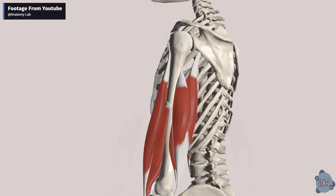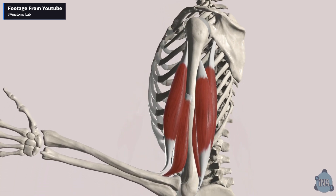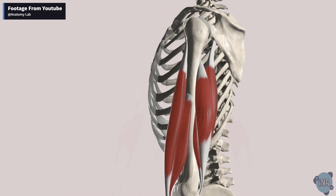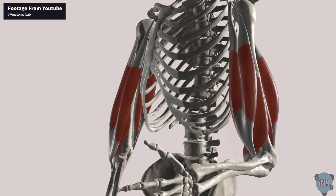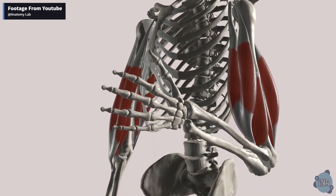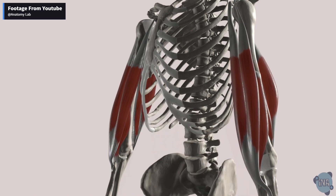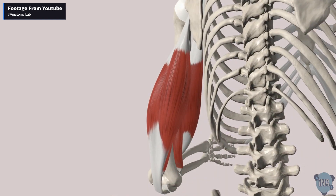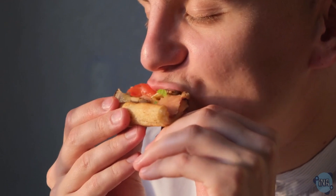Muscles can only pull — they cannot push. This would be a problem if joints were controlled by just one muscle. To solve this, our muscles work in pairs called antagonistic muscles. For example, in the elbow joint the biceps and triceps work together to move the forearm up and down. When the biceps contracts, the triceps relaxes, and vice versa. The biceps contracts to raise the forearm and the triceps contracts to lower it.